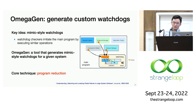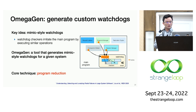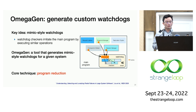Based on this principle, we proposed a software watchdog abstraction that has a number of mimic-style checkers. Those checkers basically imitate the main program by executing similar operations. These watchdogs are customized to each given system so that they inspect different modules and report issues specific to that module. To help developers construct such mimic watchdogs, we designed a tool called OmegaGen.